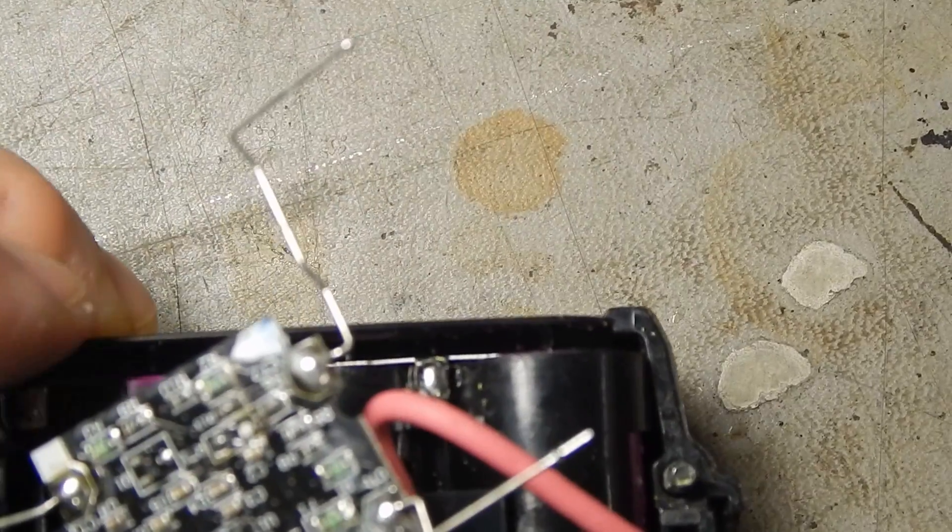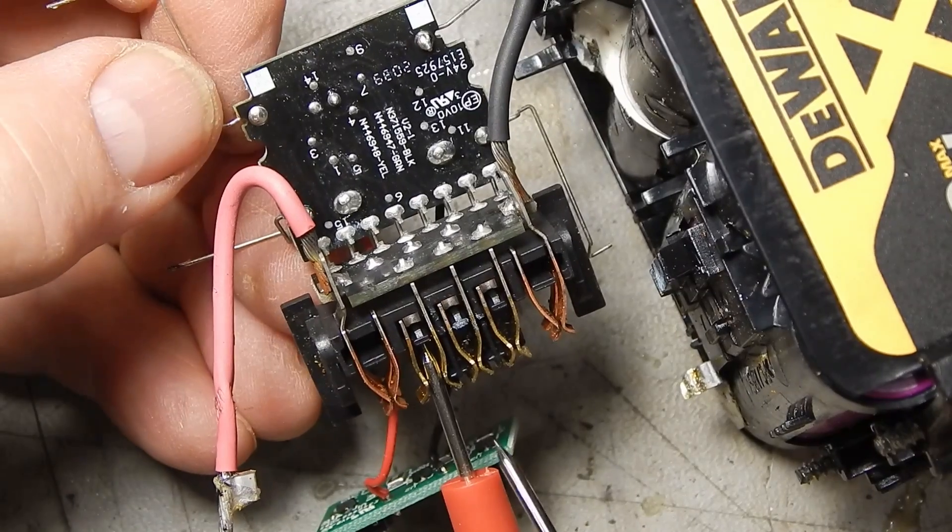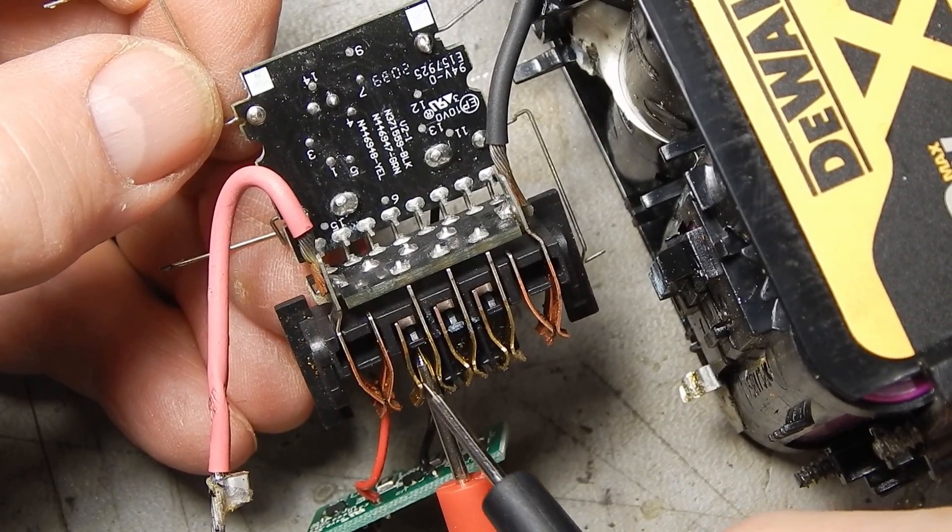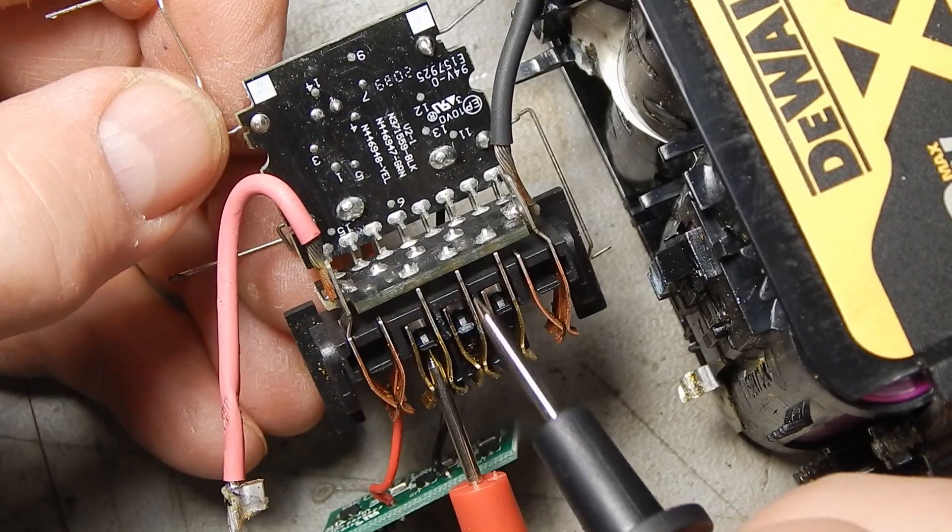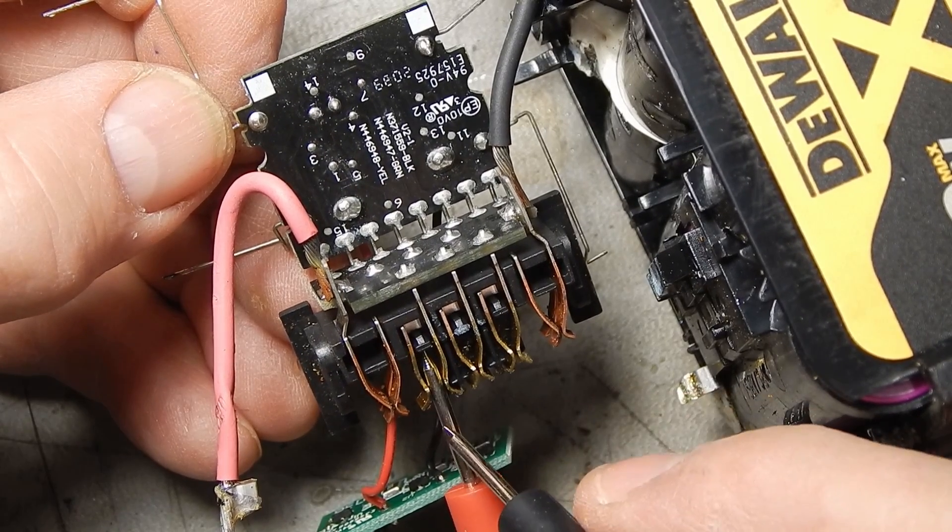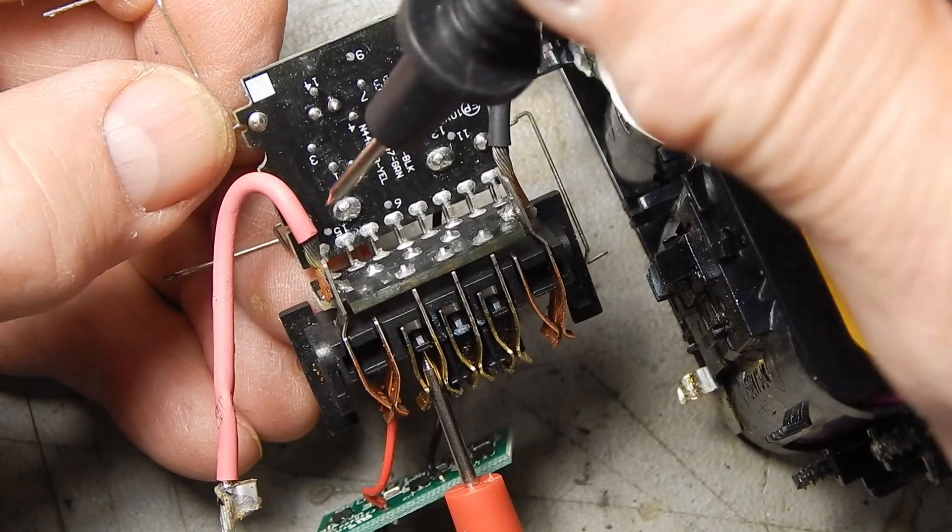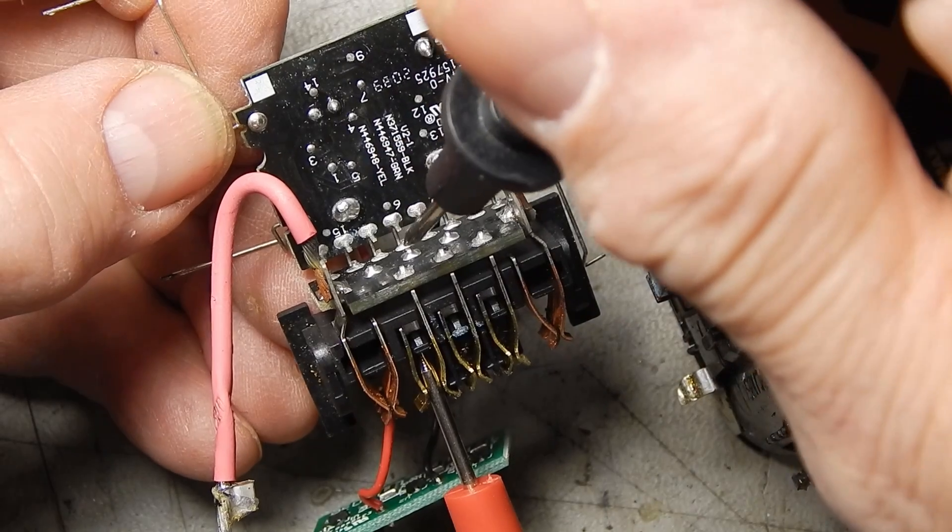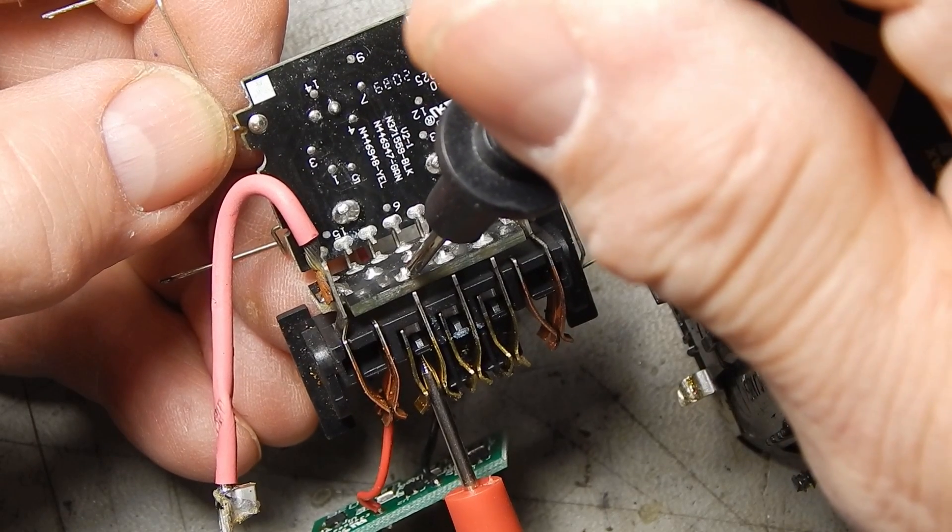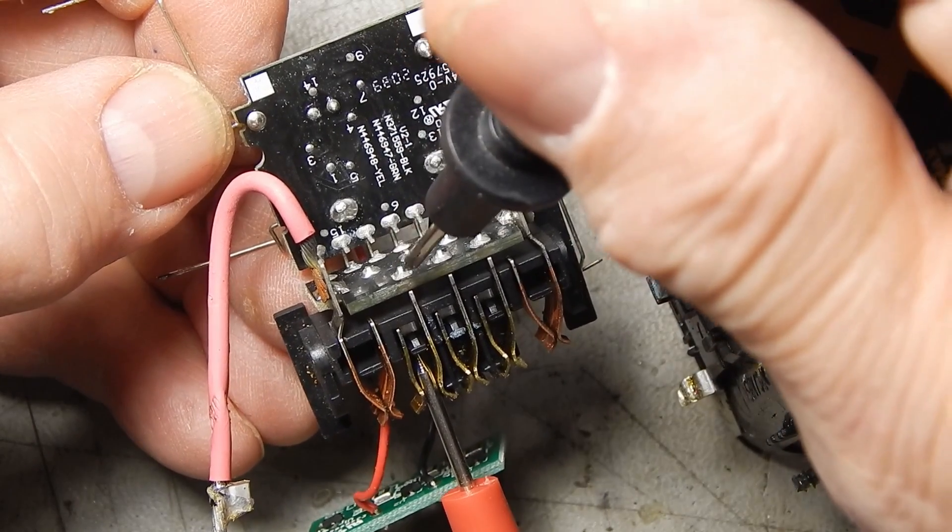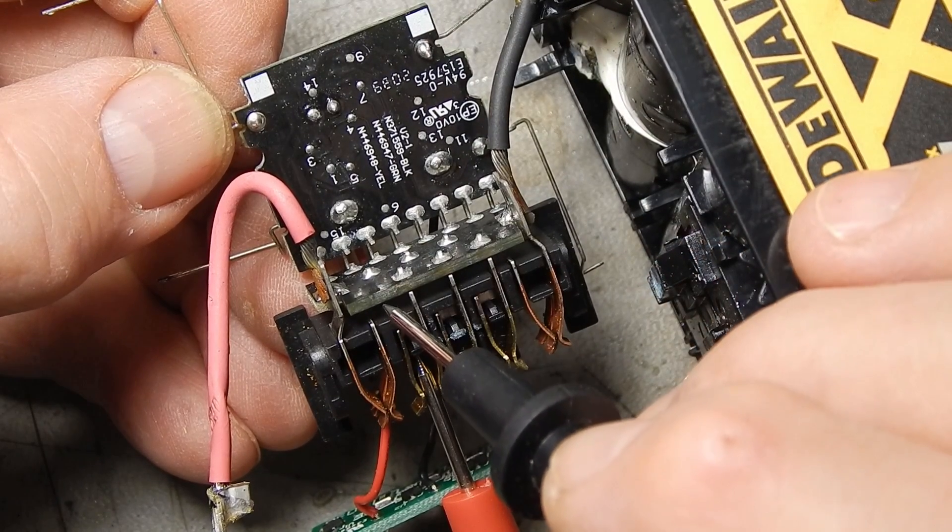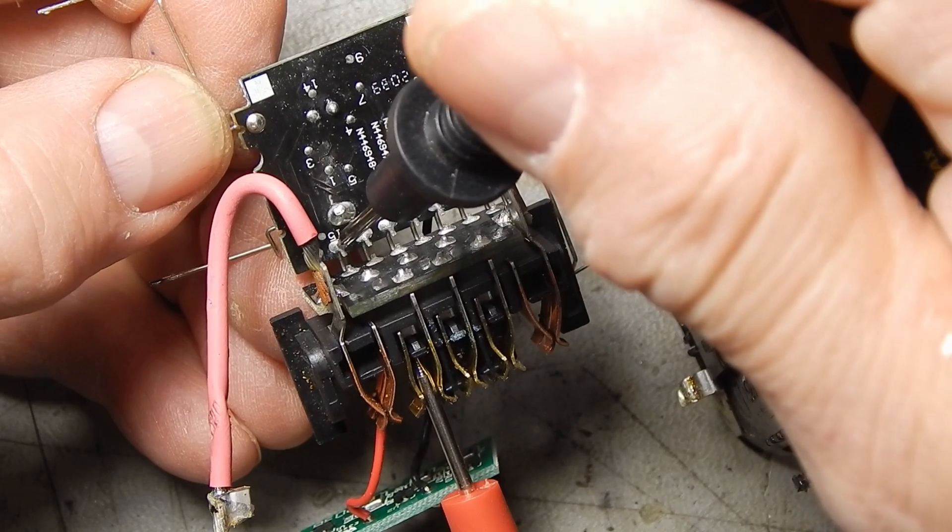So our problem is somewhere else on this board. Let's do some continuity testing. This terminal here is the thermistor sense point, I've got one side of my multimeter connected here. We have continuity here, the trace for this is on this side of the board and it goes down to the second point here.